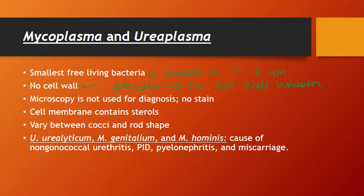Identifying these organisms will actually really inform how you might treat a patient that is infected with one of them. They can vary in shape anywhere from a cocci shape to a rod shape, but that's not really going to help you, because with no cell wall we can't use Gram stain like we do for other organisms. Gram stain really only shows you the presence or lack thereof of a thick peptidoglycan, and these organisms don't have peptidoglycan because they have no cell wall.